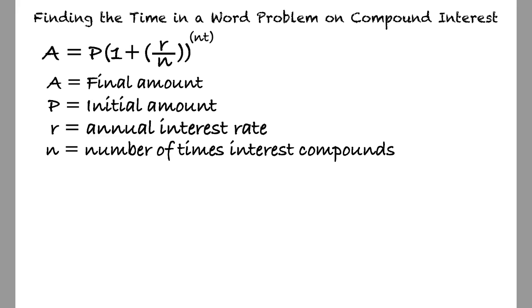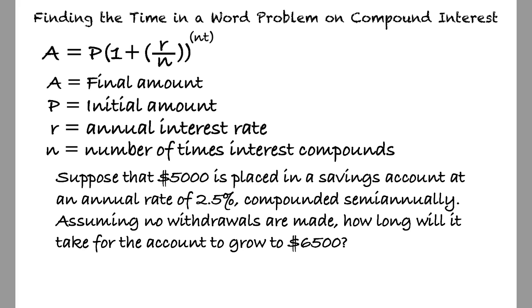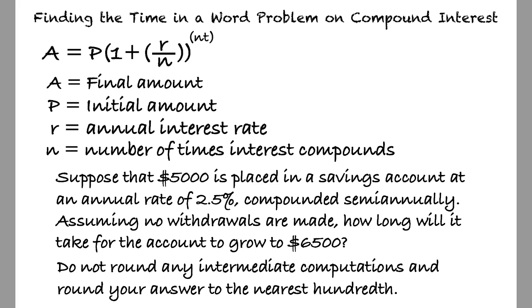Next, let's look at an example problem for this topic. Suppose that $5,000 is placed in a savings account at an annual rate of 2.5%, compounded semi-annually. Assuming no withdrawals are made, how long will it take for the account to grow to $6,500? Do not round any intermediate computations and round your answer to the nearest hundredth.